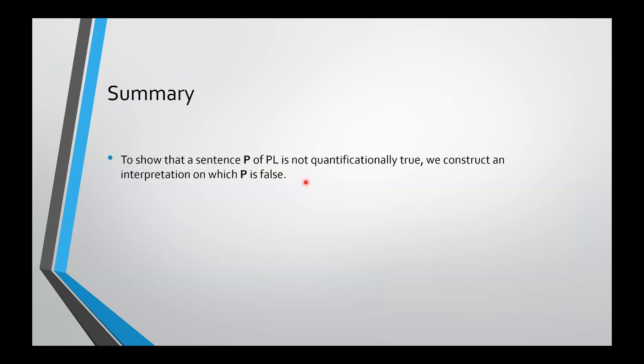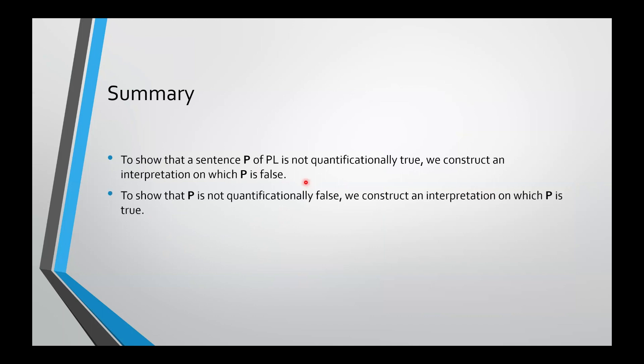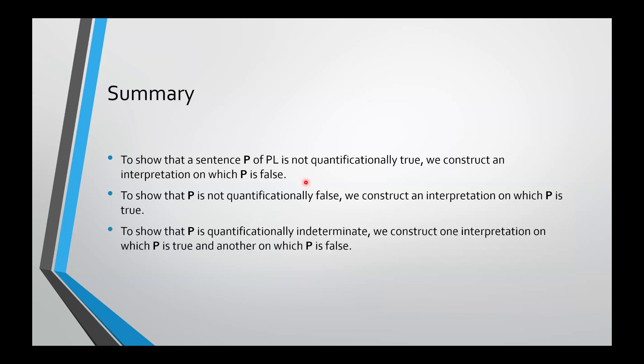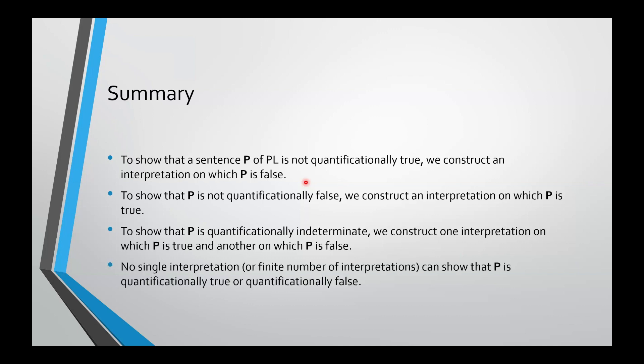Here's a summary. If you want to show that a sentence is not quantificationally true, construct an interpretation on which it is false. If you want to show it's not quantificationally false, construct an interpretation on which it's true. If you want to show it's quantificationally indeterminate, you need two interpretations — one on which it's false and one on which it's true. No single interpretation, and in fact no finite number of interpretations, can show that a sentence is quantificationally true or quantificationally false.